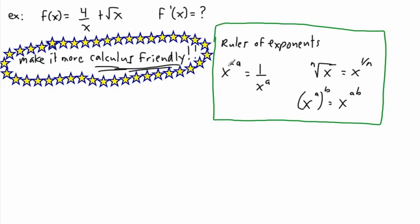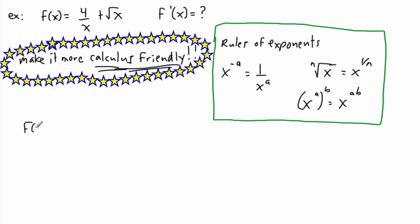Now let's use these properties to work with our example and make it more calculus friendly. We start with f of x — and keep in mind I'm not yet doing the derivative, I'm not doing f prime. There's a 4 on the top; it still stays on top. But 4 over x, using the negative exponent property, is the same thing as saying 4 times x to the power of negative 1. So although 4/x looks nice and compact, this rewritten form is much easier to work with in calculus.